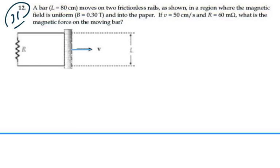So we have a velocity of this bar going to the right, and that velocity is 0.5 meters per second. We have a resistance equal to 60 milliohms, which would be 0.06 ohms. And we have a magnetic field that's into the page, and the value of that is 0.3 tesla.